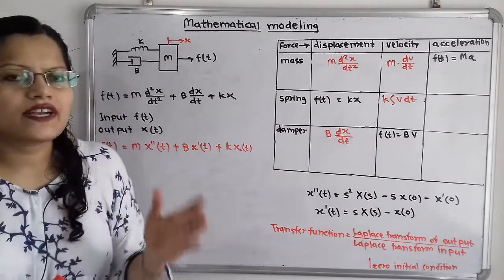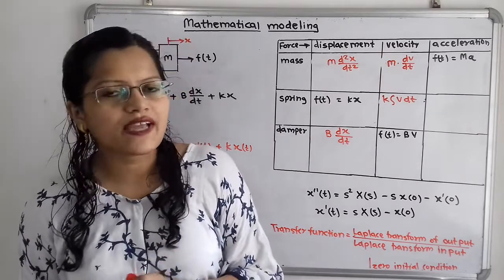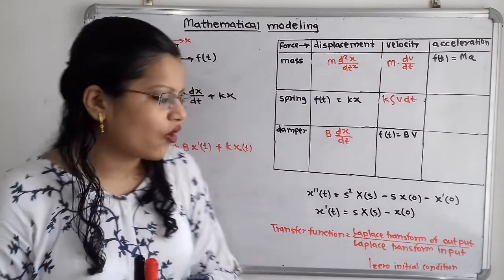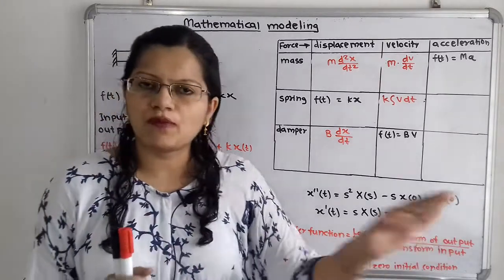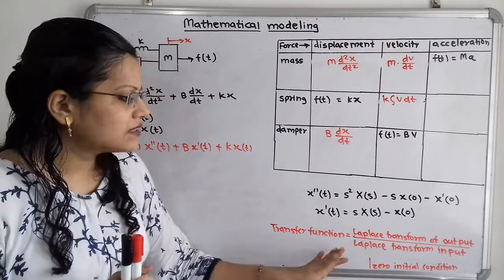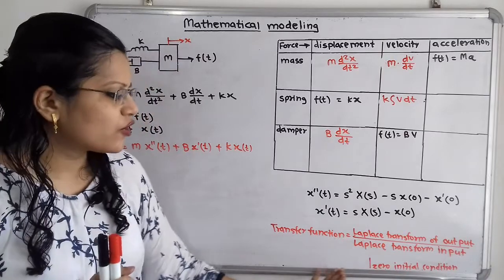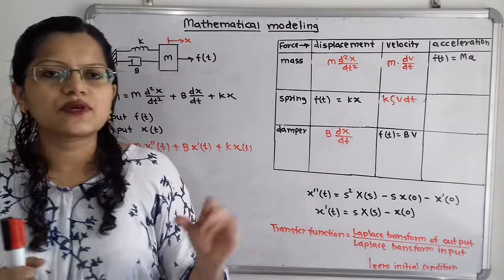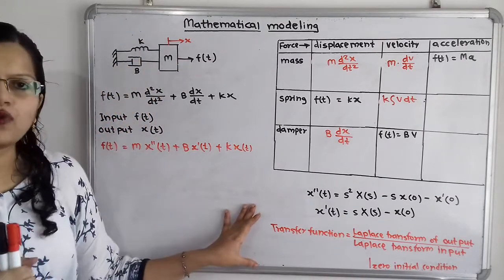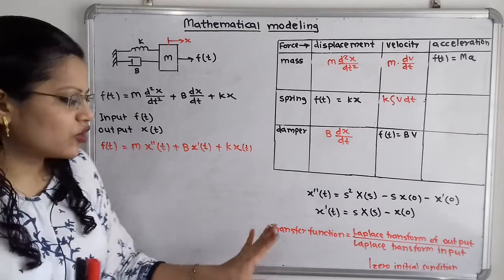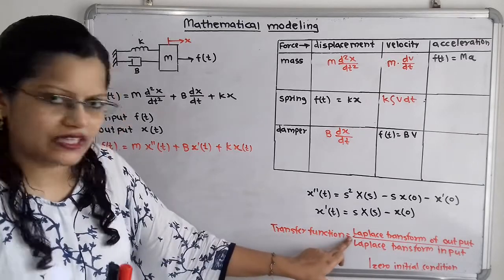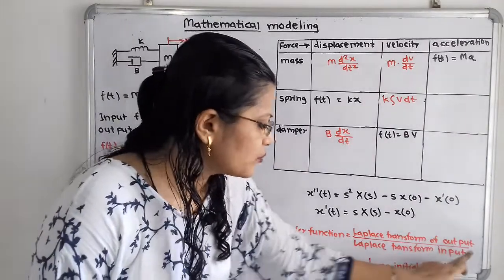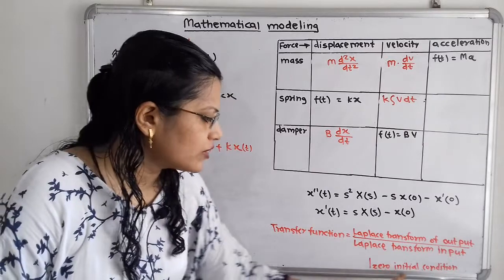Now we need to understand what is the transfer function. The transfer function is nothing but the ratio of the Laplace transform of the output to the Laplace transform of the input with zero initial conditions. This is a very important formula — note it down: Transfer Function = L{output} / L{input}, with zero initial conditions.